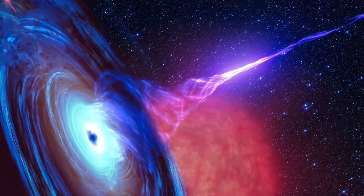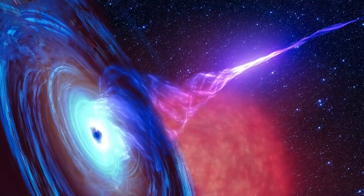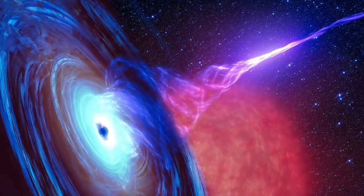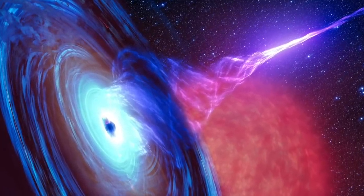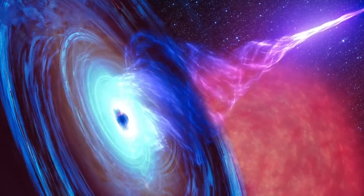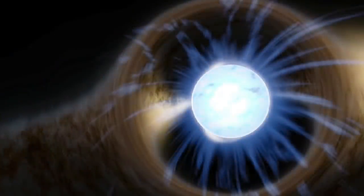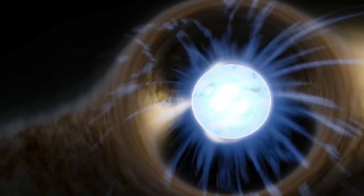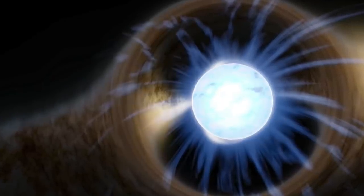This newly discovered black hole goes by the name PSO J030947.49 and 271757.31. This blazer, which is an active galactic nucleus with a jet, is the most distant one the researchers have found.